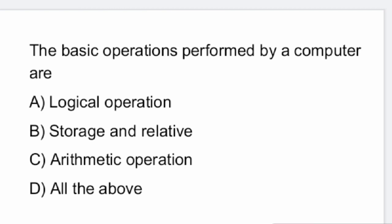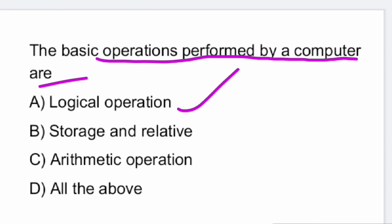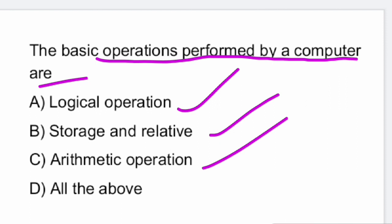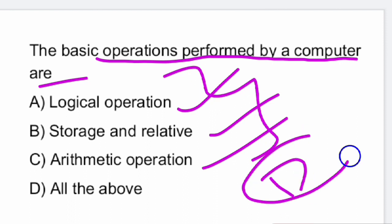Next question: what are the basic operations performed by a computer? The basic operations performed by a computer are logical operations, storage and relative operations, and arithmetic operations. All these operations — A, B, and C — are performed. Therefore, option D is the right answer.